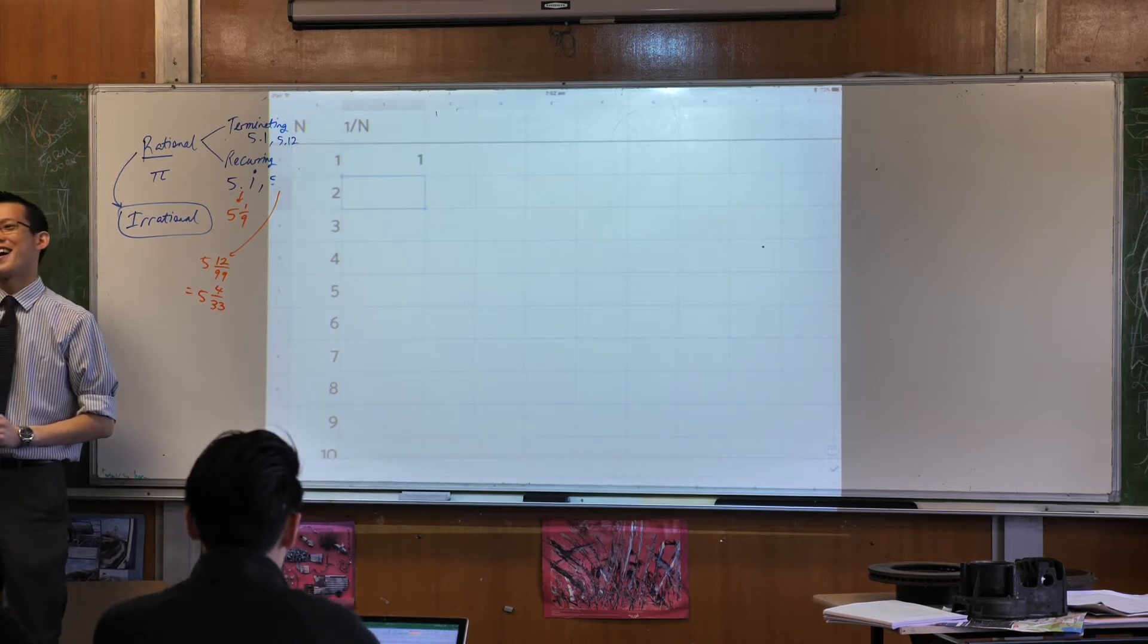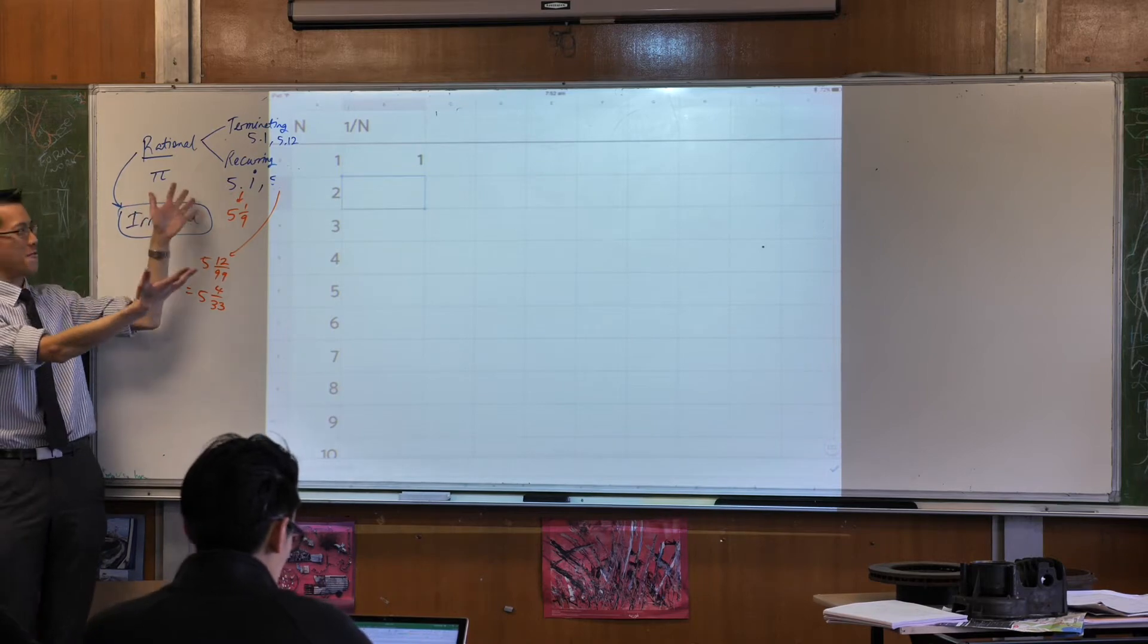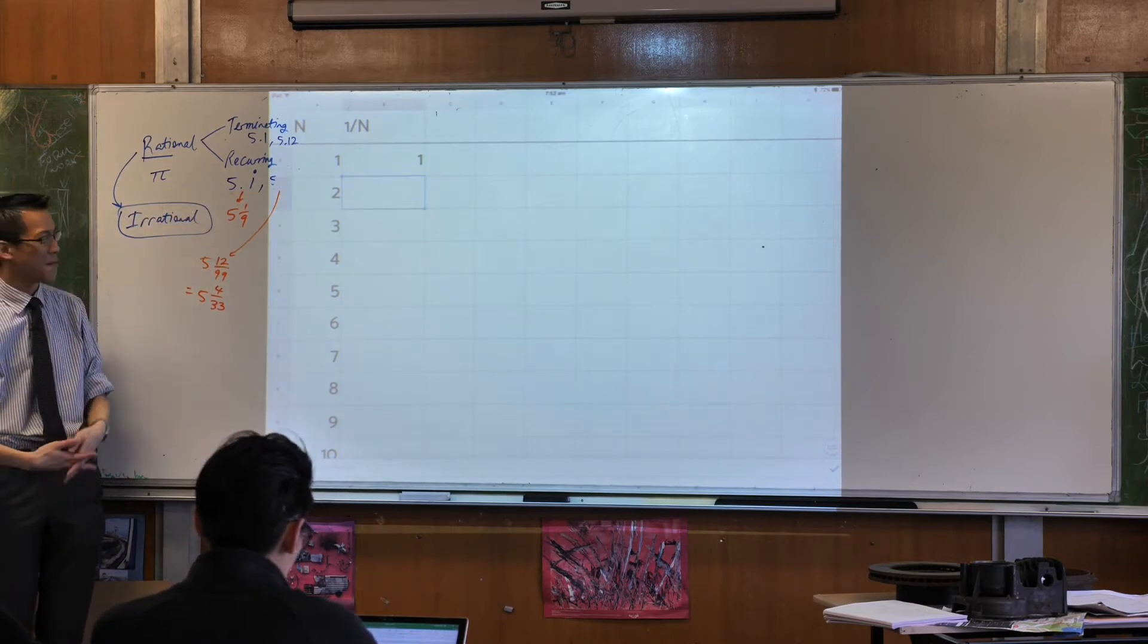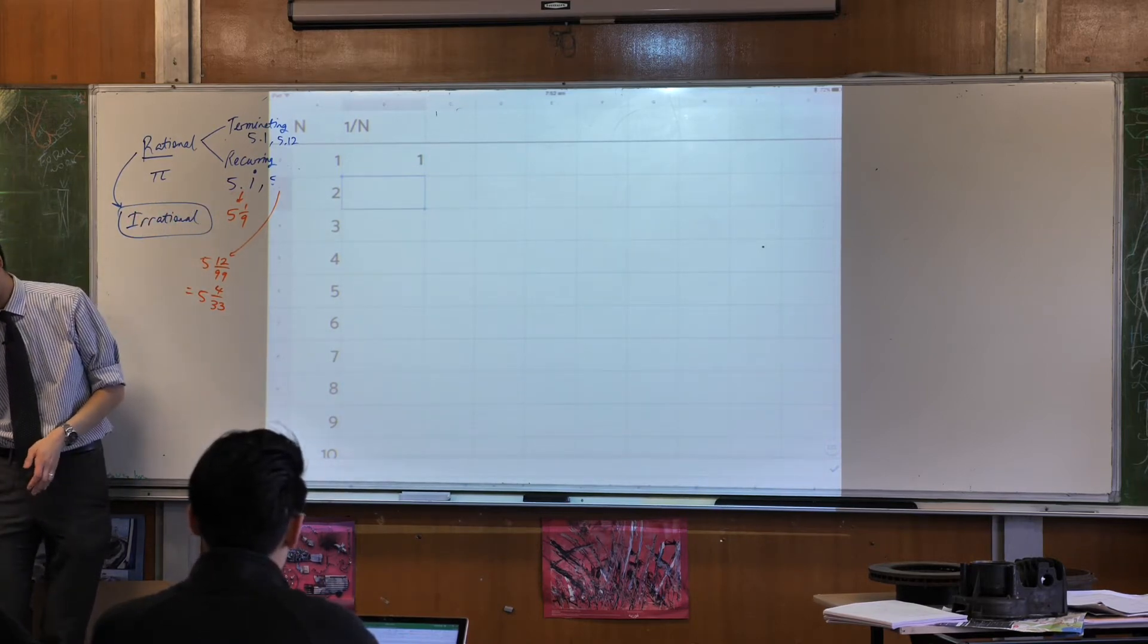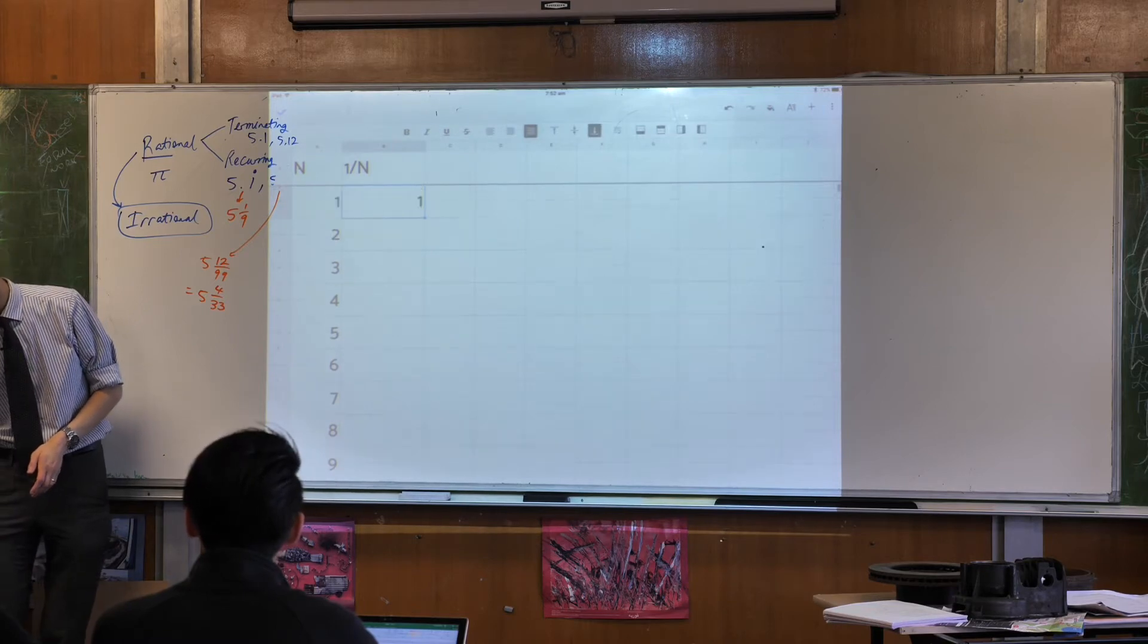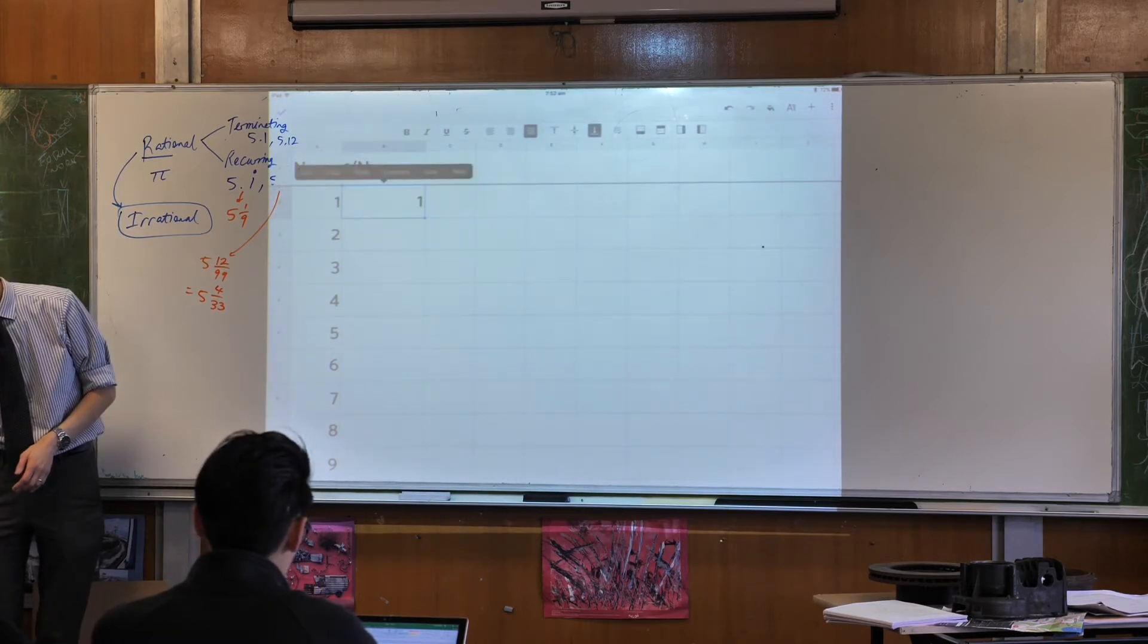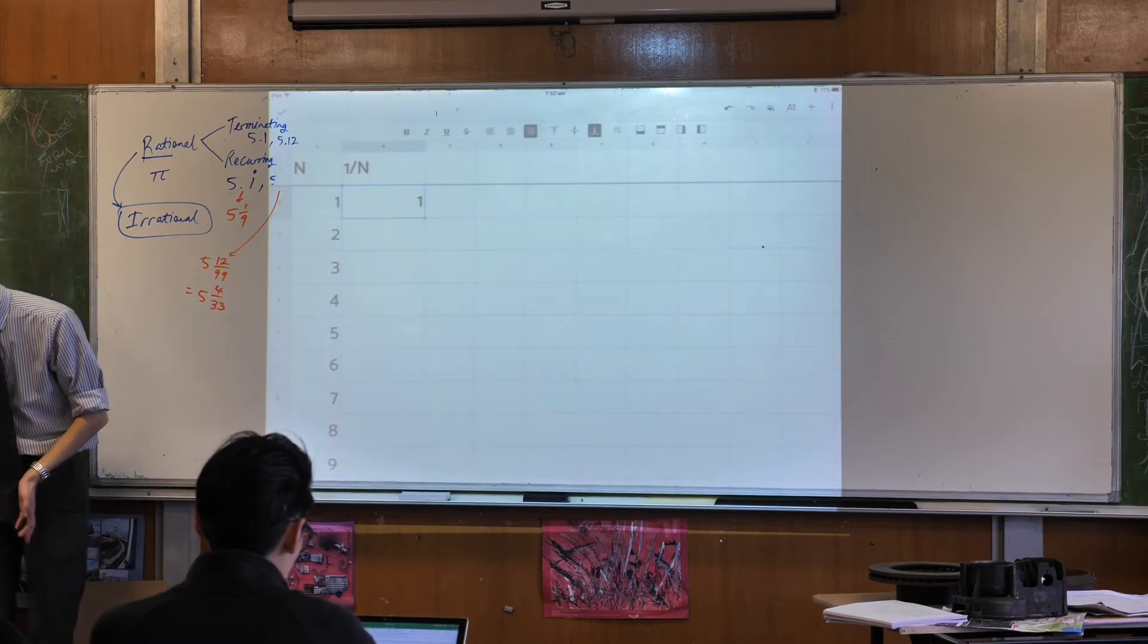So when you hit equals you're like, oh wow, this is the wonder of a spreadsheet that I'm used to seeing, okay. But that was obviously not the point. Go back to that cell, copy it, and then paste it for as far as you'd like.